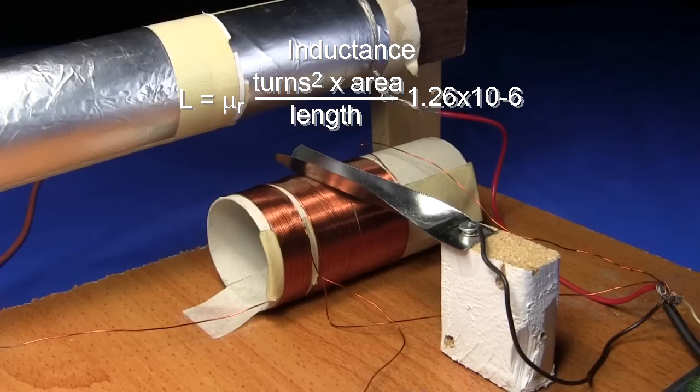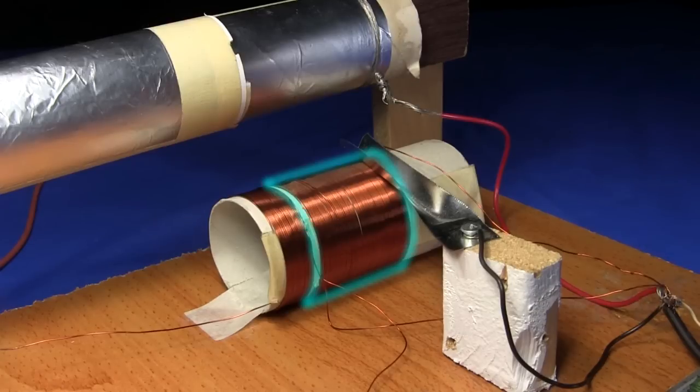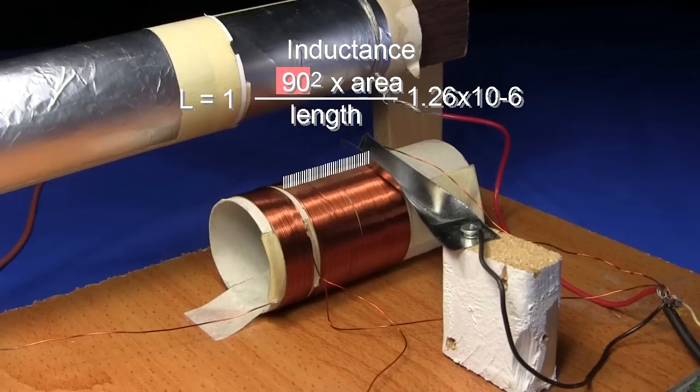Let's do an example using the formula. Here are the values for my crystal radio's coil. If the wiper blade is all the way to the right, then we're using the full coil. It's an air core, so the relative permeability is 1. It has 90 turns. The radius is 0.022 meters.